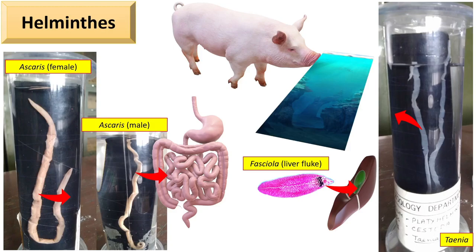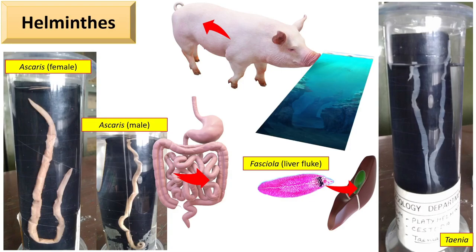Roundworms or Nematodes are slender worms that can live, feed, and reproduce in the human intestine. For their parasitic nature, they developed specific features such as a tough, thick, and resistant tegument or cuticle covering on the body, low metabolic rate, anaerobic respiration, and adhesive organs like suckers and hooks.